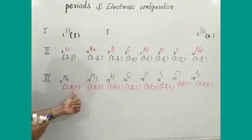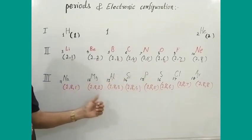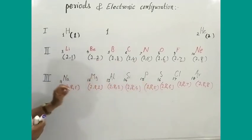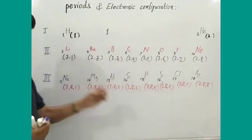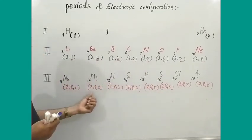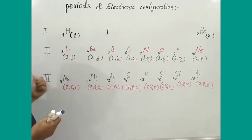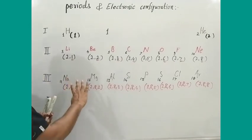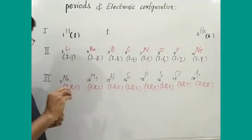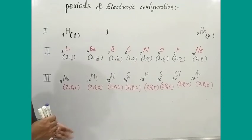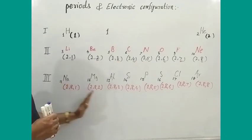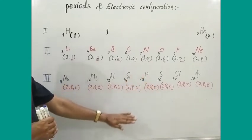The number of valence electrons increases by one from left to right — valence electrons go on increasing, but the number of shells remains constant. The number of valence electrons goes on increasing, increased by one from left to right. This is the key difference.